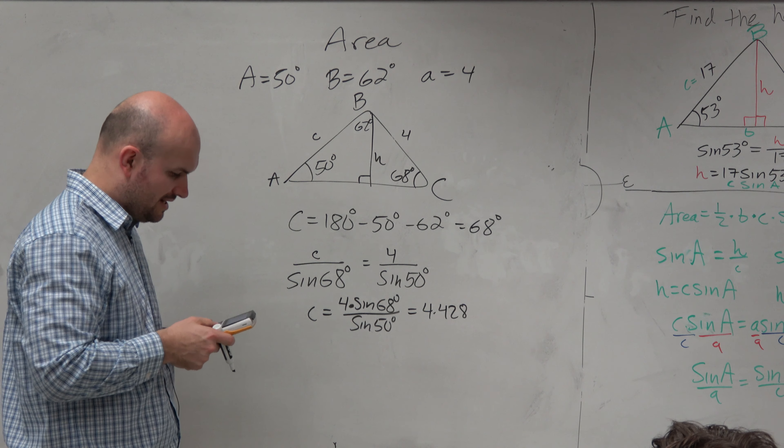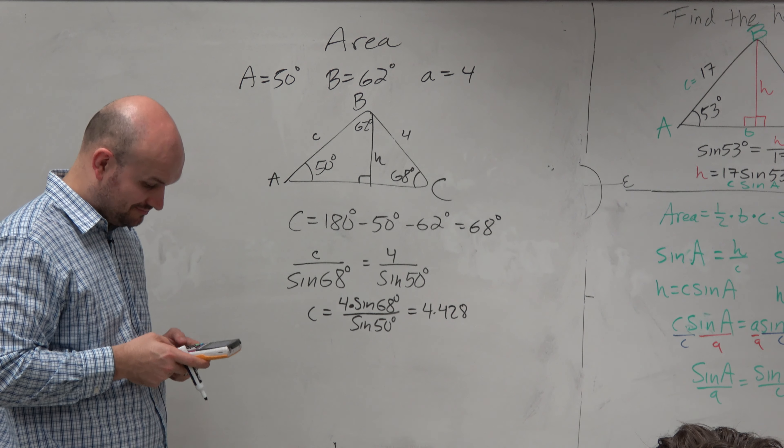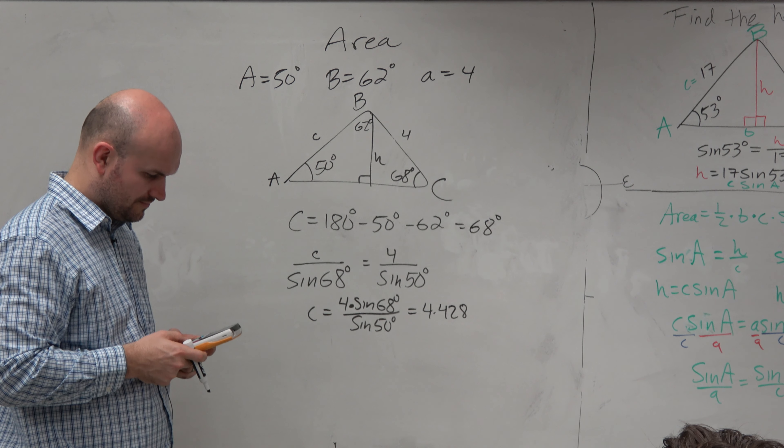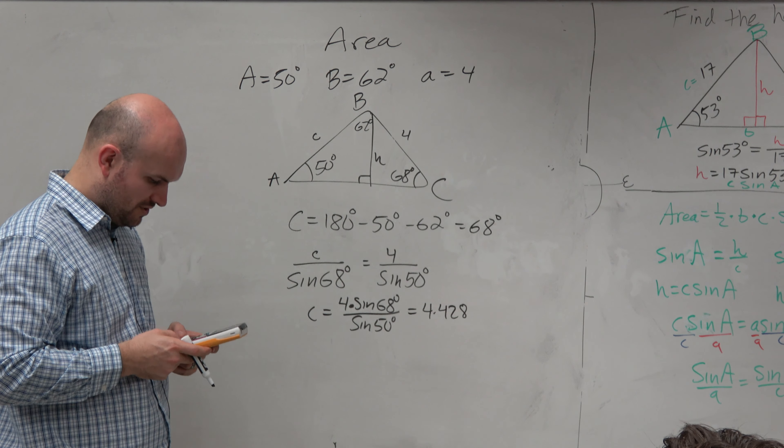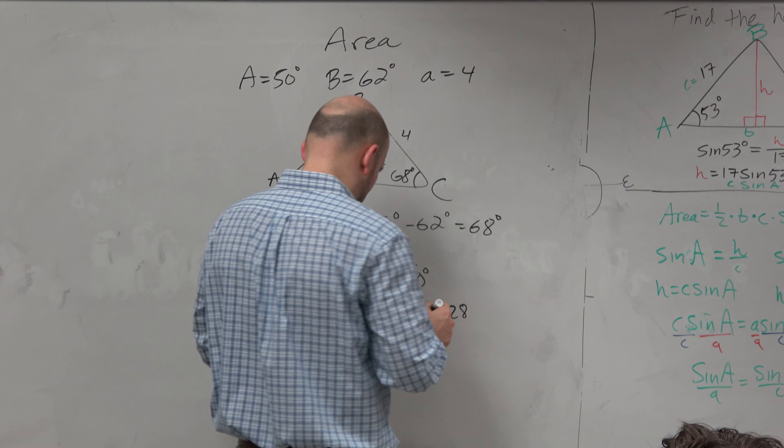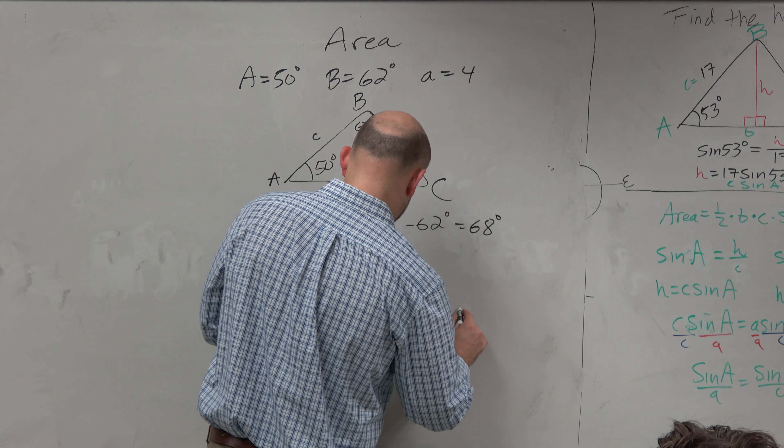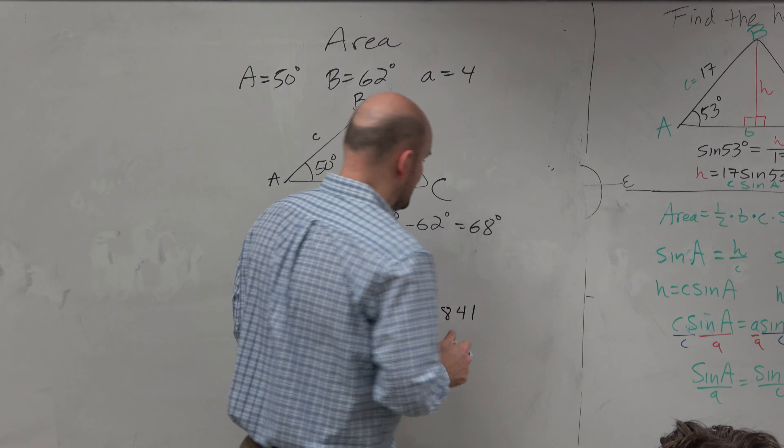Four times, oh, that's right. Good thing, I typed it in wrong. Wow. So it's 4 times the sine of 68 divided by the sine of 50. 4.8414, right? Yes. All right, now, guys,